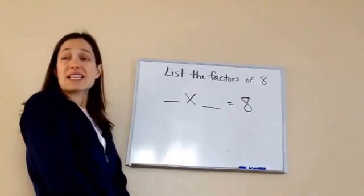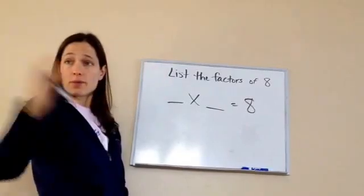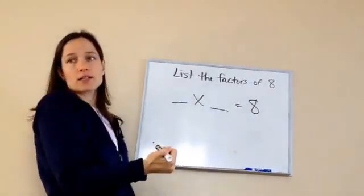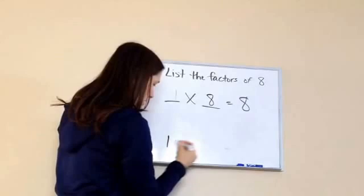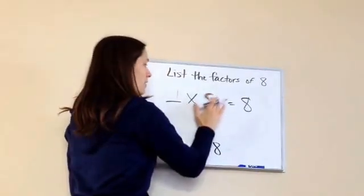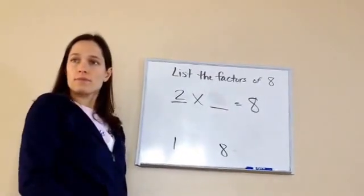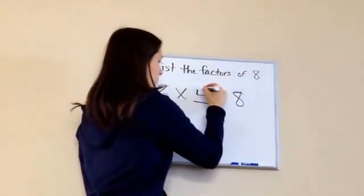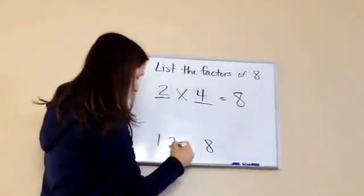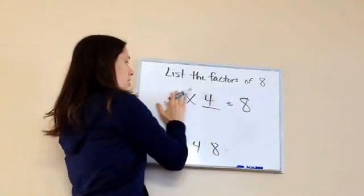It's always easy just to start with one and then move up. So one times what equals eight? Eight. One times eight equals eight, so I'm gonna put one and eight down here. Does two times something equal something? Two times four. Okay, so two and four come down here.